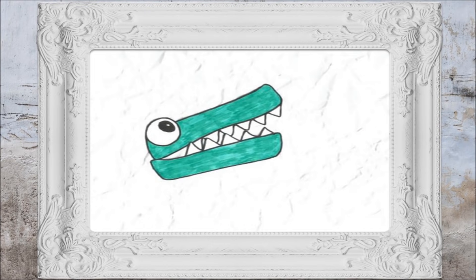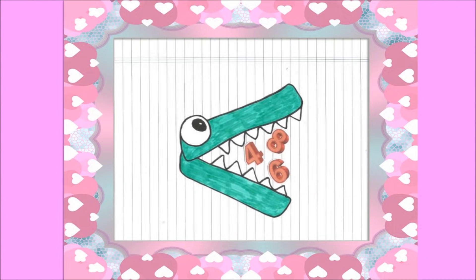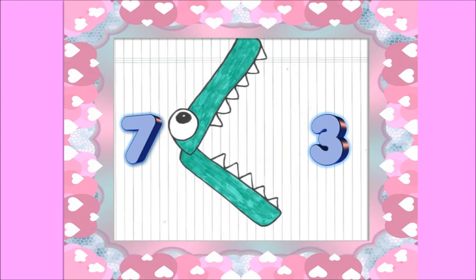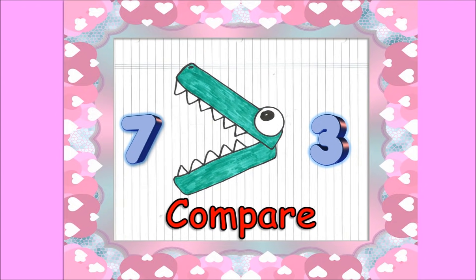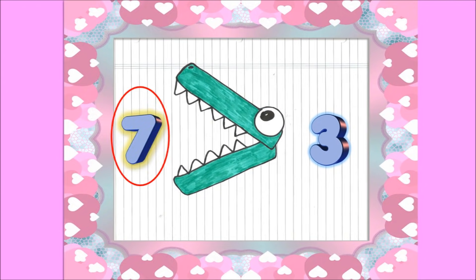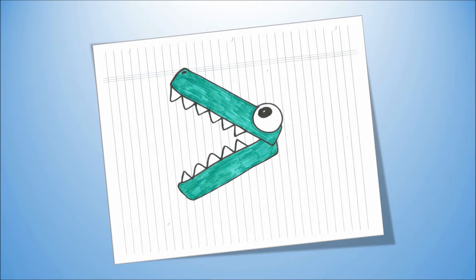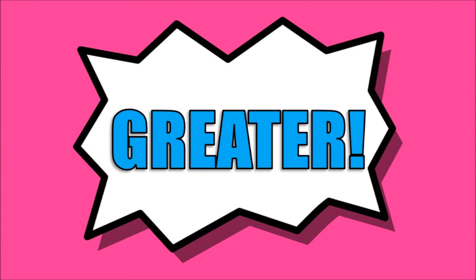Once upon a time there was a hungry alligator. He loved to eat numbers, so he figured out a way to always get the biggest right when the numbers were there. He would stop for a second, take a look and compare. Whichever number was the biggest of the two was the one that he would eat. He always eats the number that's greater, greater!